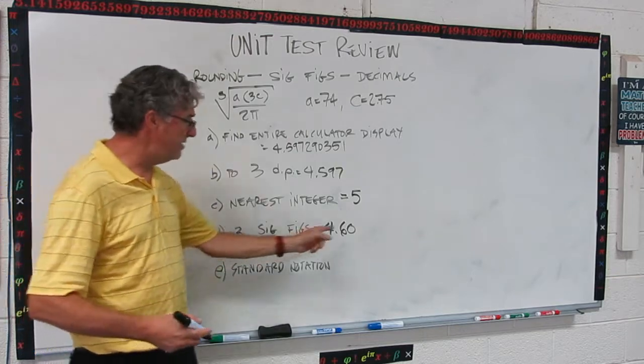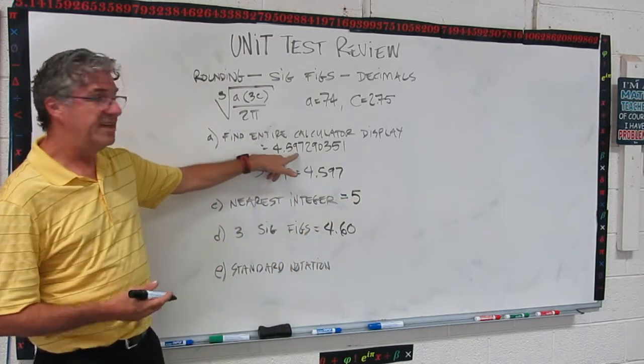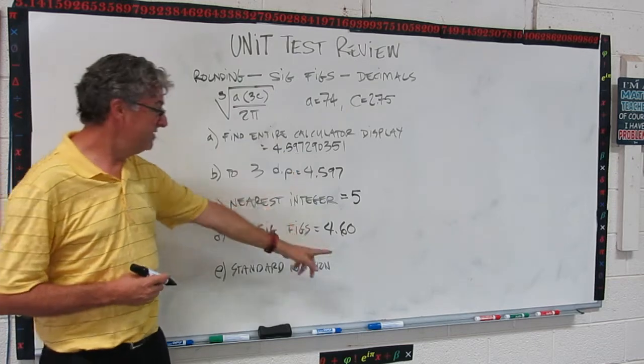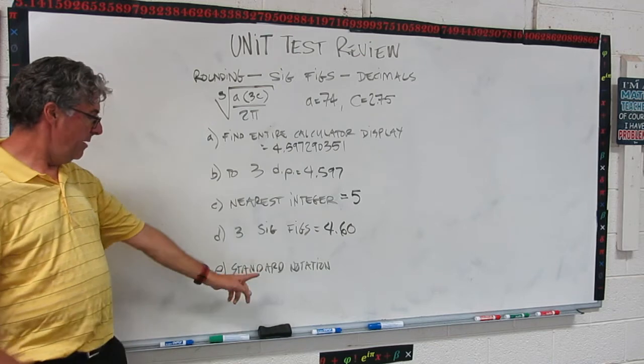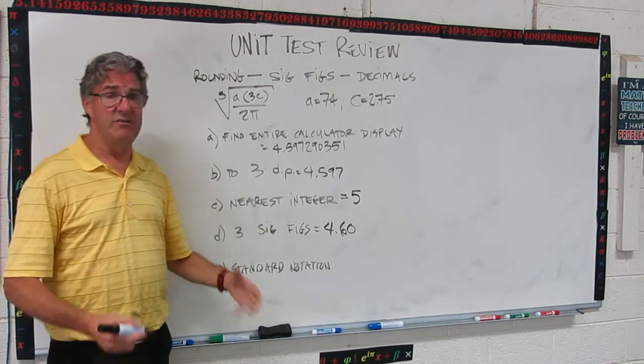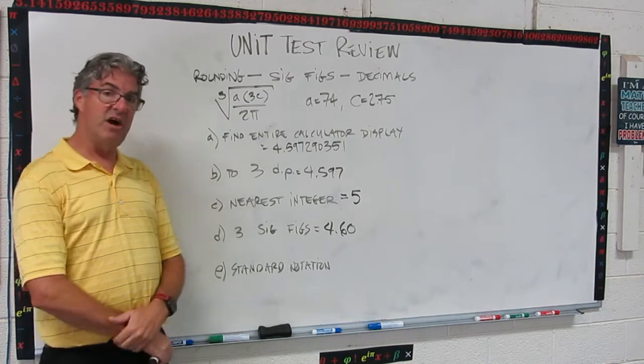It's significant because it's telling us that we rounded that position up to zero. So you want to put that on there. As a rule, you don't generally add a bunch of zeros to the right of the decimal. But if you rounded the number that's in that place away, you want to put the zero there. Okay, last one. Put it in standard notation. Now you remember what standard notation is? Scientific notation. So pause the video and do that.